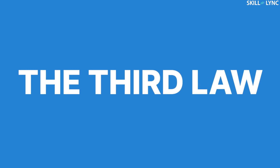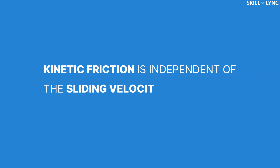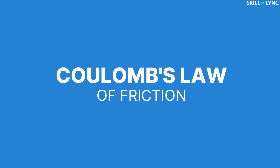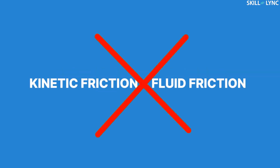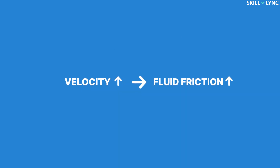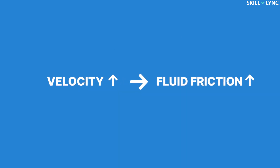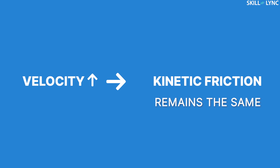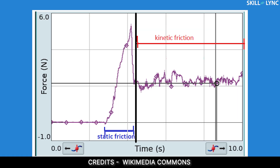The third law of friction states that kinetic friction is independent of the sliding velocity of the object. This is also called Coulomb's law of friction. It is vital that you don't confuse kinetic friction with fluid friction, because for fluid friction, an increase in velocity increases the value of friction — but this is not the case for kinetic friction. To better understand this, let's look at this graph. The x-axis denotes time, while the y-axis denotes frictional force.